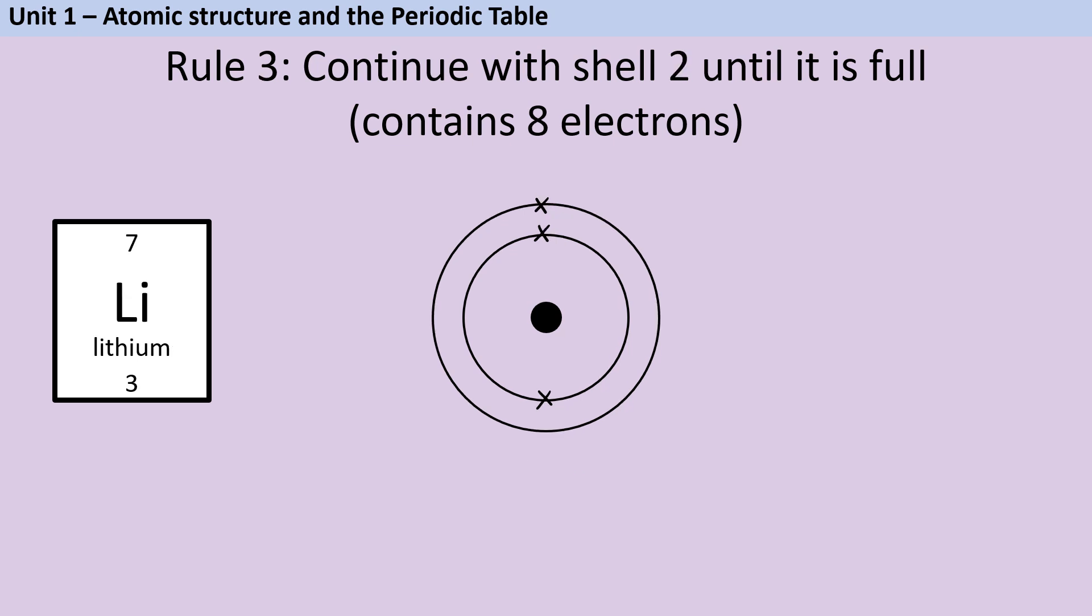Now we're going to move on to lithium which has three electrons, and so now we're going to start needing to use our second shell because that first shell could only fit two electrons in it. We place our first two electrons as near to the nucleus as we can in shell one and then the third electron is going to spill over into the second shell.